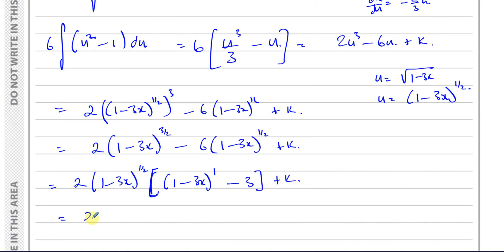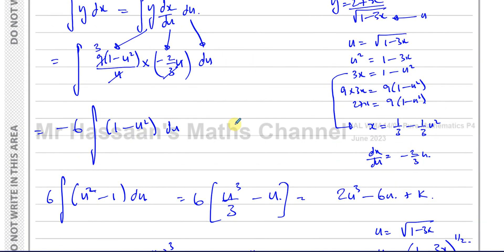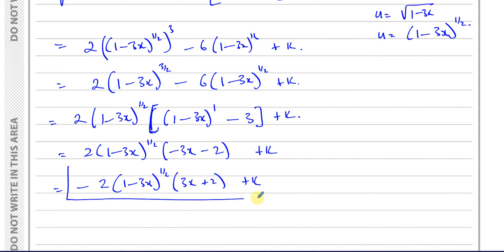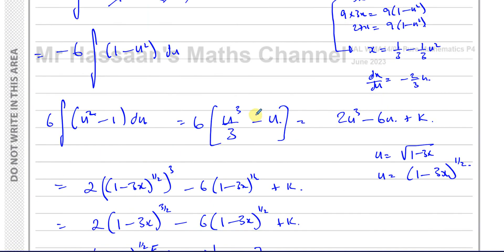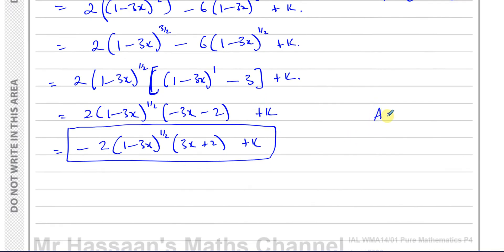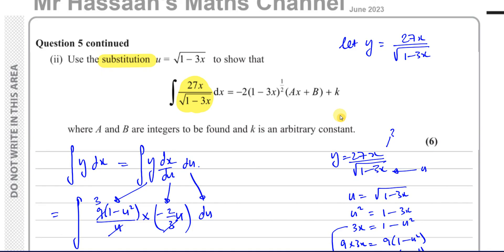So we have 2(1 minus 3x)^(1/2) times (1 minus 3x minus 3), which simplifies to 2(1 minus 3x)^(1/2) times (minus 3x minus 2) plus k. Taking out minus 1 from the inner bracket gives minus 2(1 minus 3x)^(1/2) times (3x plus 2) plus k. This matches the required form: a equals 3 and b equals 2.